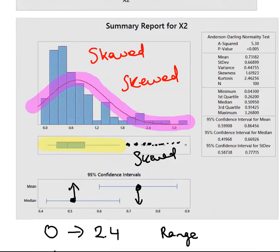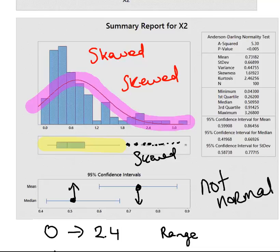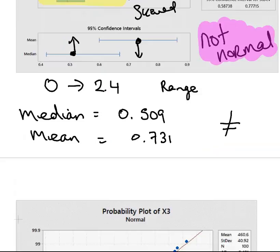X2 is not normal. That's our overall conclusion for X2. It is skewed. It is not normally distributed. The median, in this case, is the correct measure of centrality to use. And if you're using the median, you use the interquartile range. Anyway, X2 is not normally distributed.